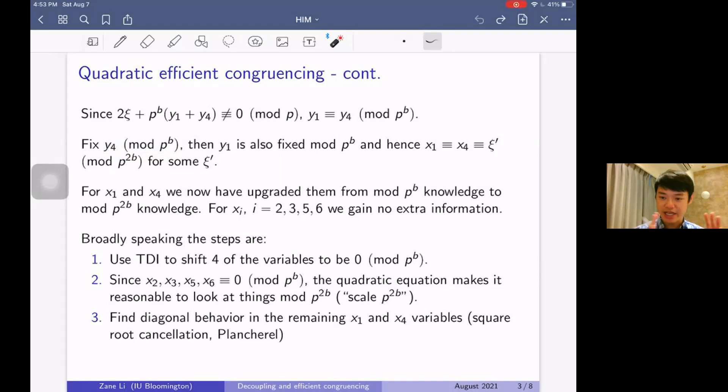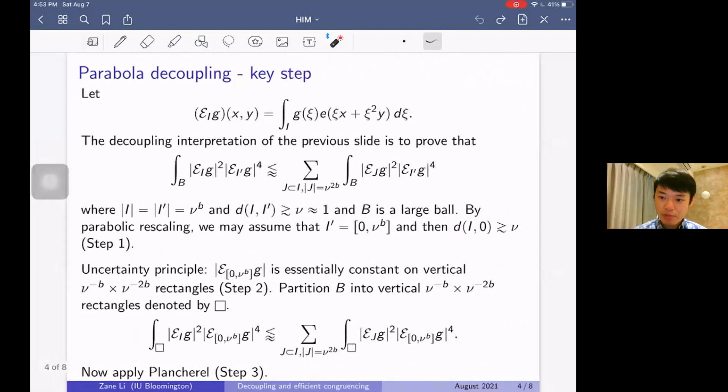So broadly speaking, the steps of this key step are that we use translation dilation invariance to shift the four variables to be at the origin. Then we use the fact that since x_2, x_3, x_5, x_6 are congruent to 0 mod p^b, the quadratic equation makes it reasonable to look at things mod p^{2b}. The next step is to find diagonal behavior or show diagonal behavior in the remaining x_1 and x_4 variables. In other words, we want to try to find square root cancellation or apply Plancherel in the harmonic analysis side.